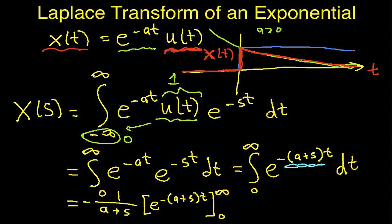So, let's look at the easy limit first. When I have t equals to 0, I plug in a 0 for t here, and this whole thing just becomes 1. When I have t going to infinity, then, depending on what happens with a plus s, either e to the minus (a plus s)t will go to infinity, or it'll go to 0.